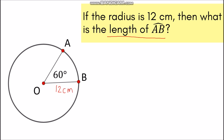The formula for solving for the arc length is: measure of the arc over 360, multiplied by the circumference, which is 2πr. Now we have to identify the measure of the arc. From the figure, there is a central angle here, which is angle AOB, and it measures 60 degrees. Using the central angle intercepted arc postulate, we can solve for the measure of the arc. So if the central angle is 60 degrees, therefore the measurement of arc AB is also 60 degrees.